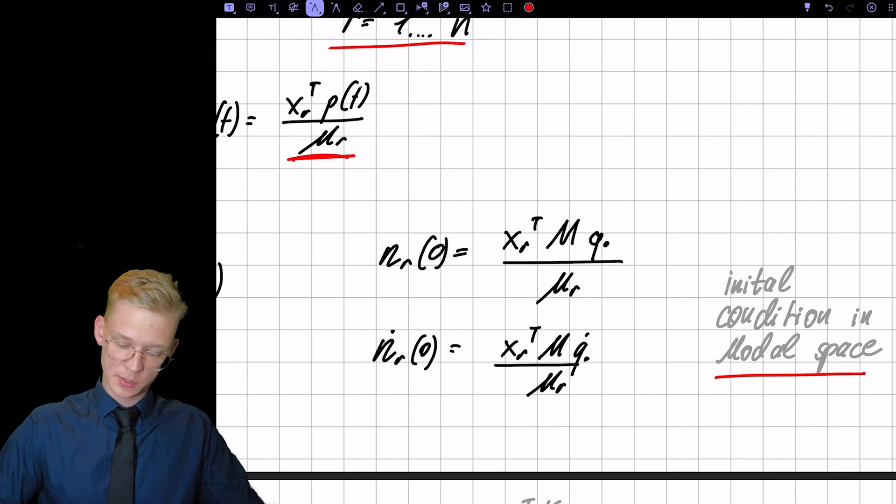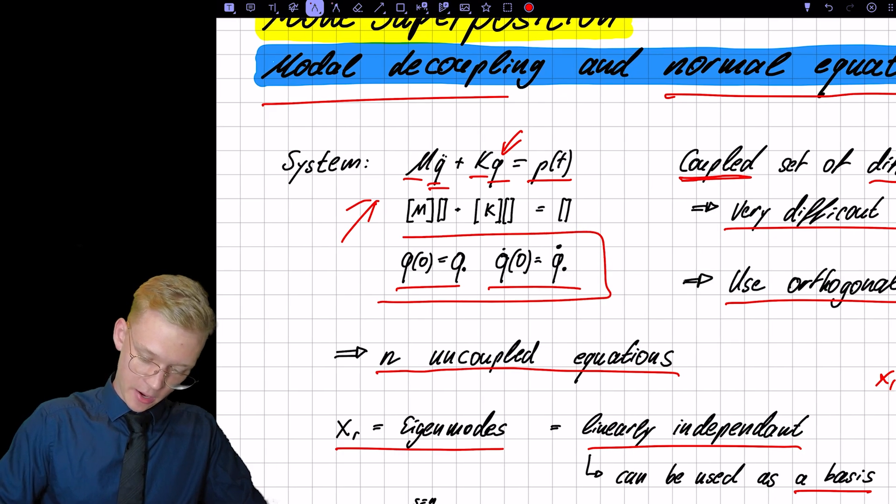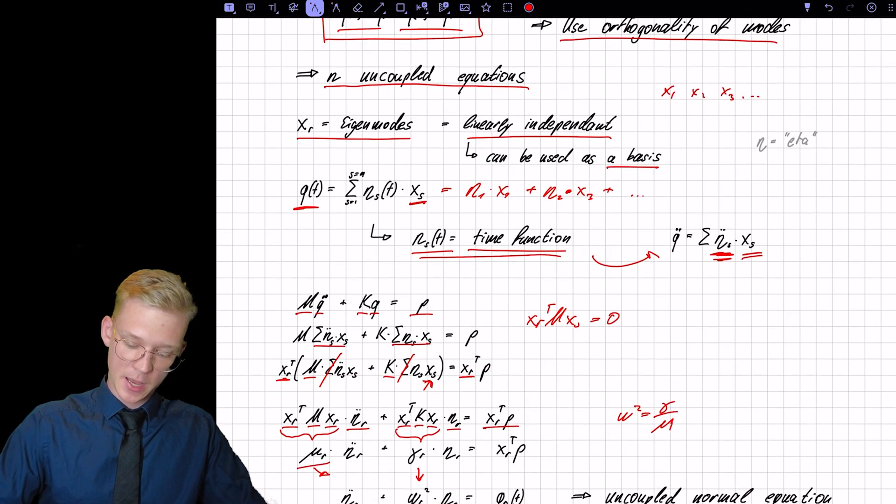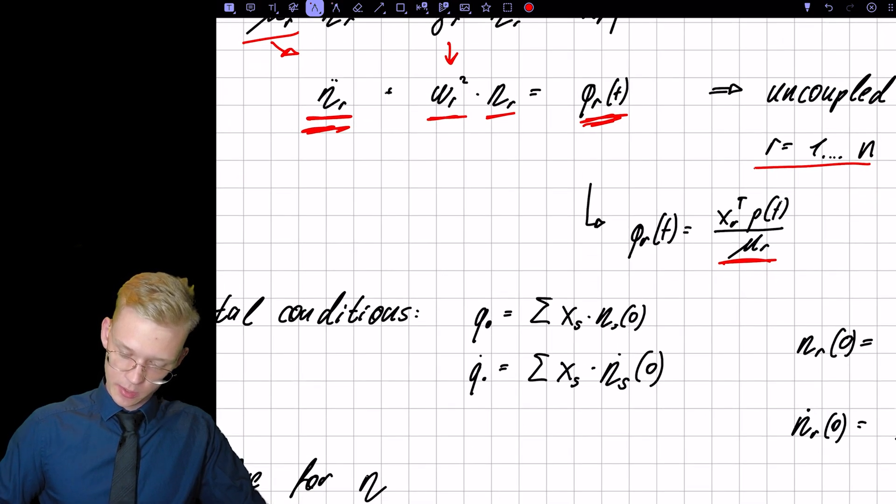So we have initial conditions given right there, but they are in physical space and we need to project them into the modal space. And we do it the same way we did with our solution.